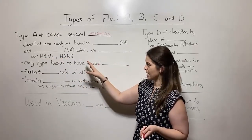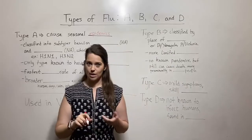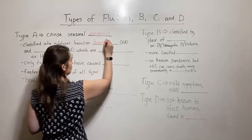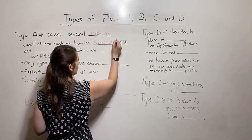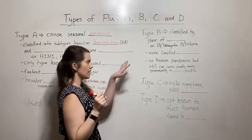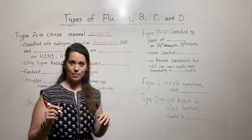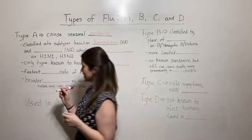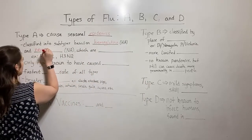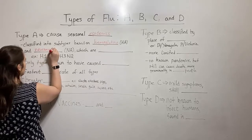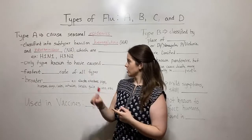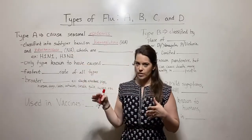Well, they're actually based on something called hemagglutinin. There we go. Hemagglutinin or HA and something else called neuraminidase. So hemagglutinin, HA, neuraminidase, NA. What are these?